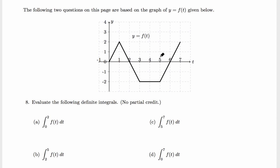Based on this graph we need to evaluate the following definite integrals. In part a we have to find the definite integral of f from 0 to 2. Looking at the graph, 0 to 2 means we are finding this area, which is a triangle. The area of a triangle is half times base times height, so half times 2 times 2 equals 2.